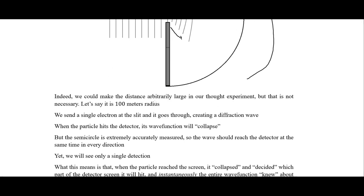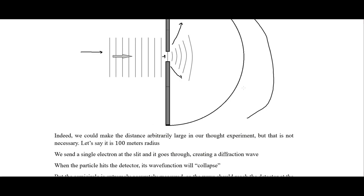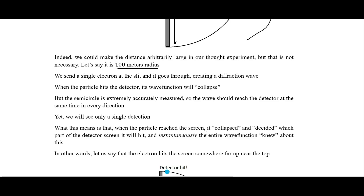We could make the distance arbitrarily large — we could make the radius of this semicircle arbitrarily large in our thought experiment, but it's not really necessary. Let's just say for the sake of argument that it's a hundred meter radius, so it's a hundred meters from the slit to one end. We send our single electron through the slit and it creates this diffraction wave.